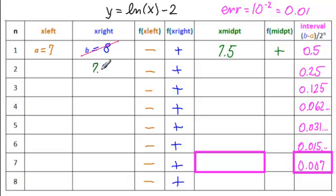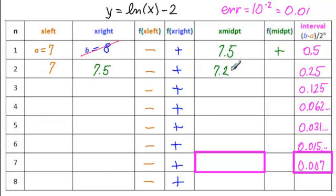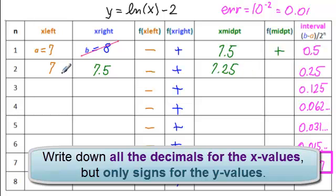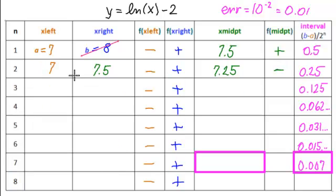So 7.5 comes here and 7 remains here, so that these signs agree. 7 goes with minus and 7.5 goes with plus. We go on to finding the midpoint of those two. So 7 plus 7.5 equals, divided by 2 equals 7.25. You want to make sure you write down all the decimals for the x's, but just the signs for the y's. Now we need the function value, so we hit ln minus 2 equals. That's negative this time. So which one do we throw away? The negative, so that's the 7 this time.